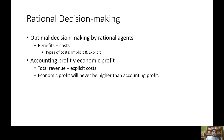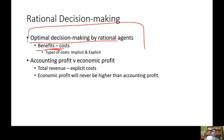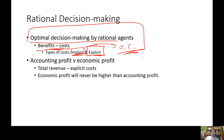Rational decision making: rational decision makers do what is called cost-benefit analysis — they consider the benefits and costs of a choice. In economics there are explicit costs, like a $10 movie ticket or gas money. There are also implicit costs, which is probably one of the most important concepts in economics. Implicit cost is an opportunity cost: the value of the best foregone alternative.